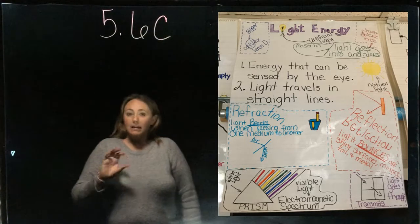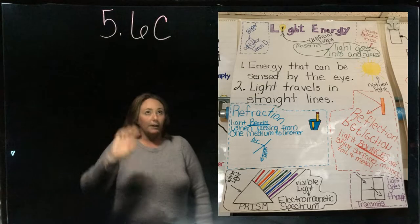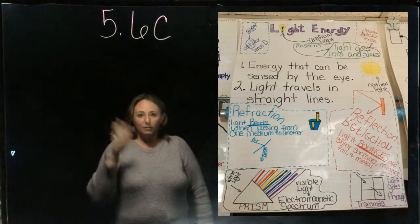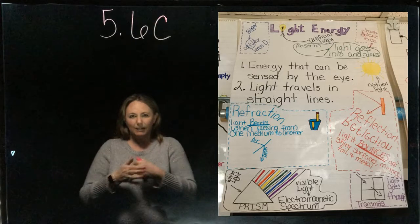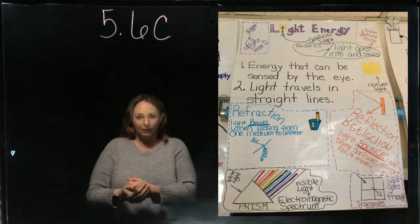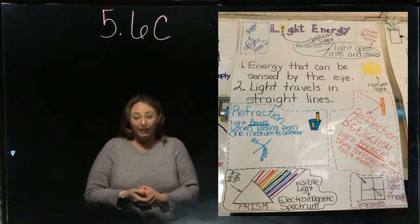So when you're dealing with light energy, light travels in straight lines like we said until it hits something, until it comes into contact with something. And when it does that, it can do one of two things—actually three things.